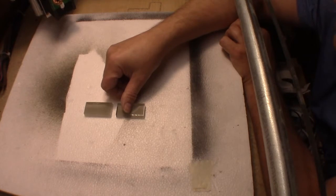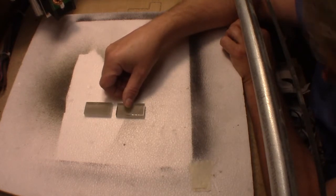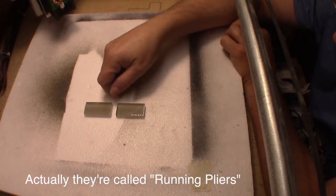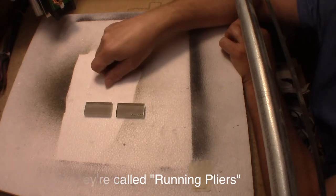I'm wondering if we etch a line going across here, if I use a set of breaking pliers, and I'll show you what those are, if we can get these guys to crack.